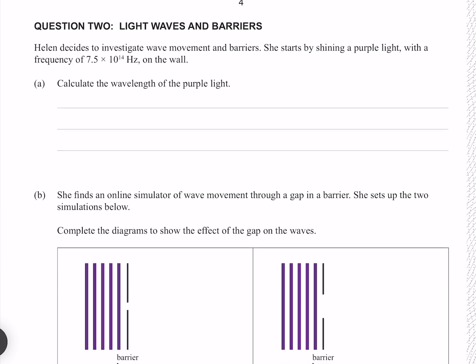Question 2. Helen decides to investigate wave movement and barriers. She starts by shining a purple light with a frequency of 7.5 times 10 to the 14 hertz on the wall. Calculate the wavelength of the purple light.